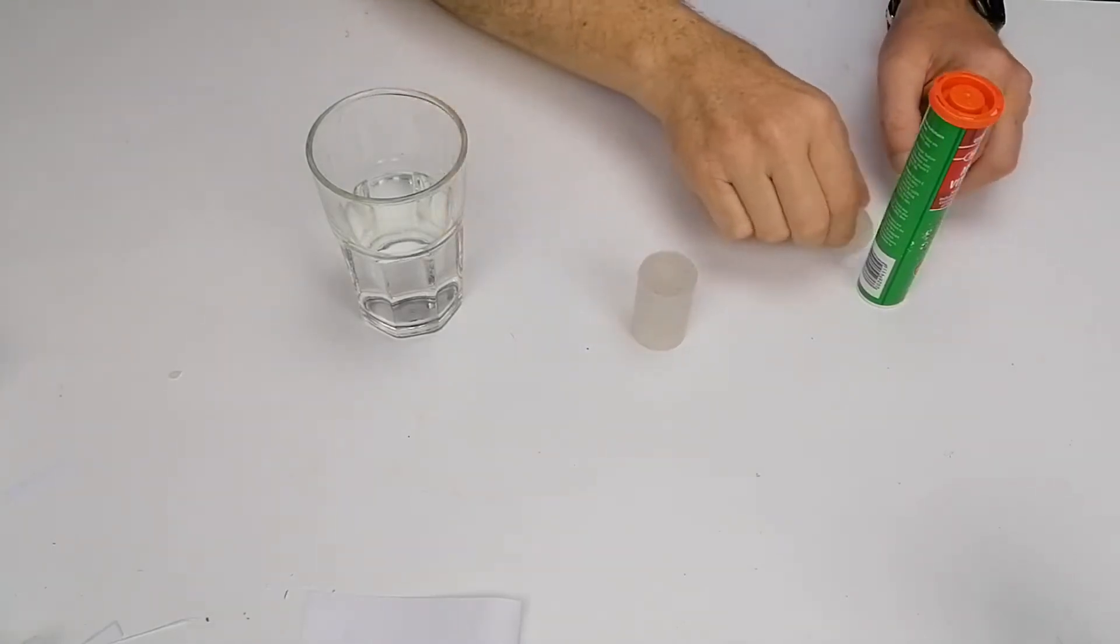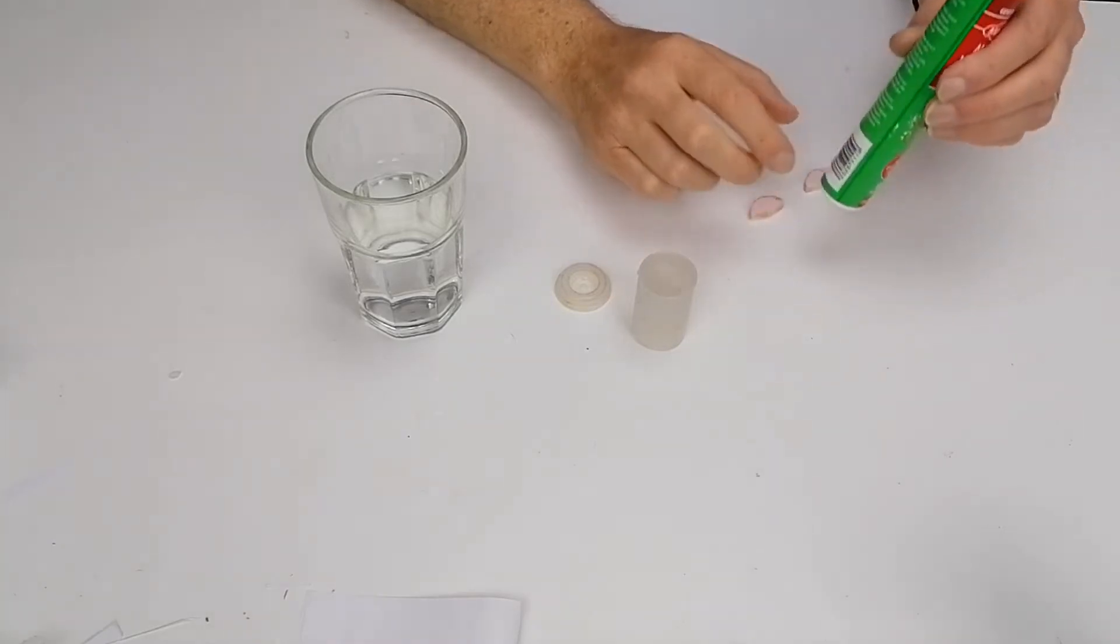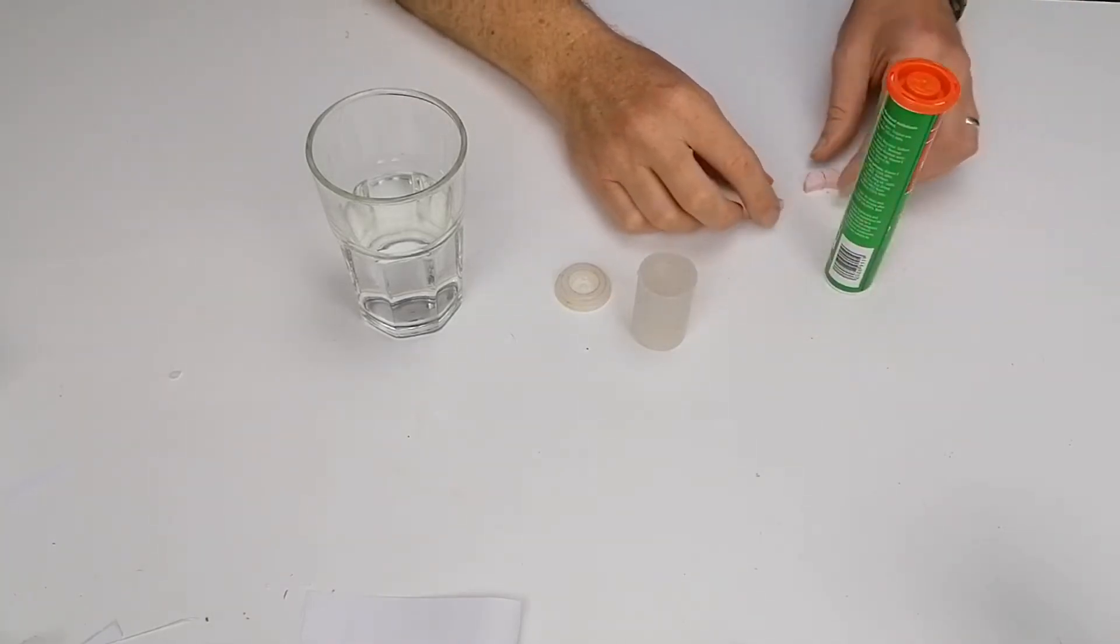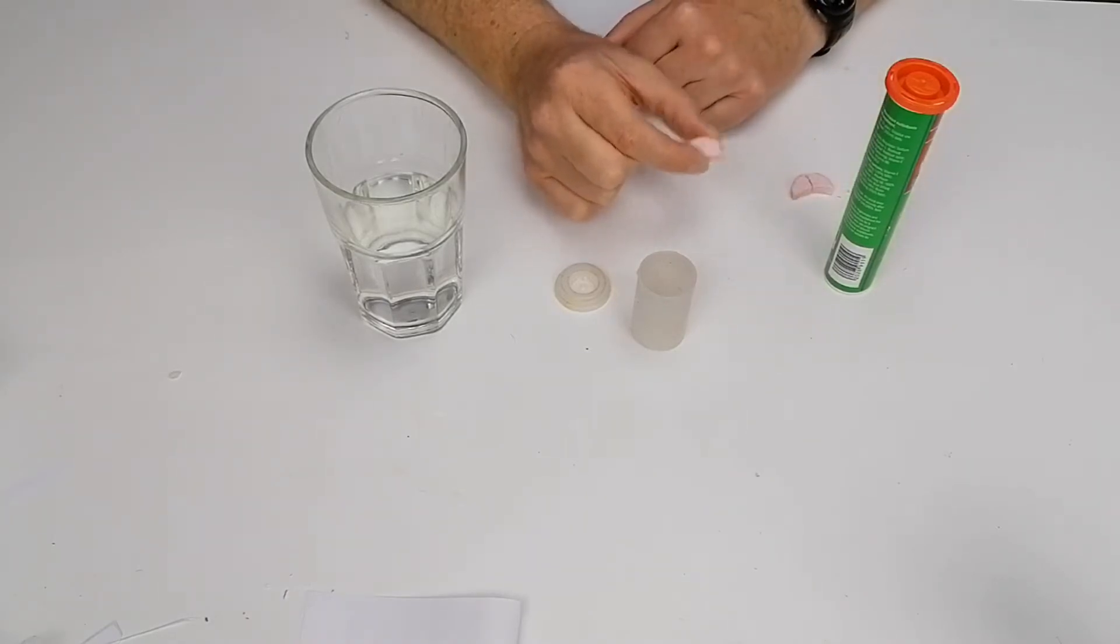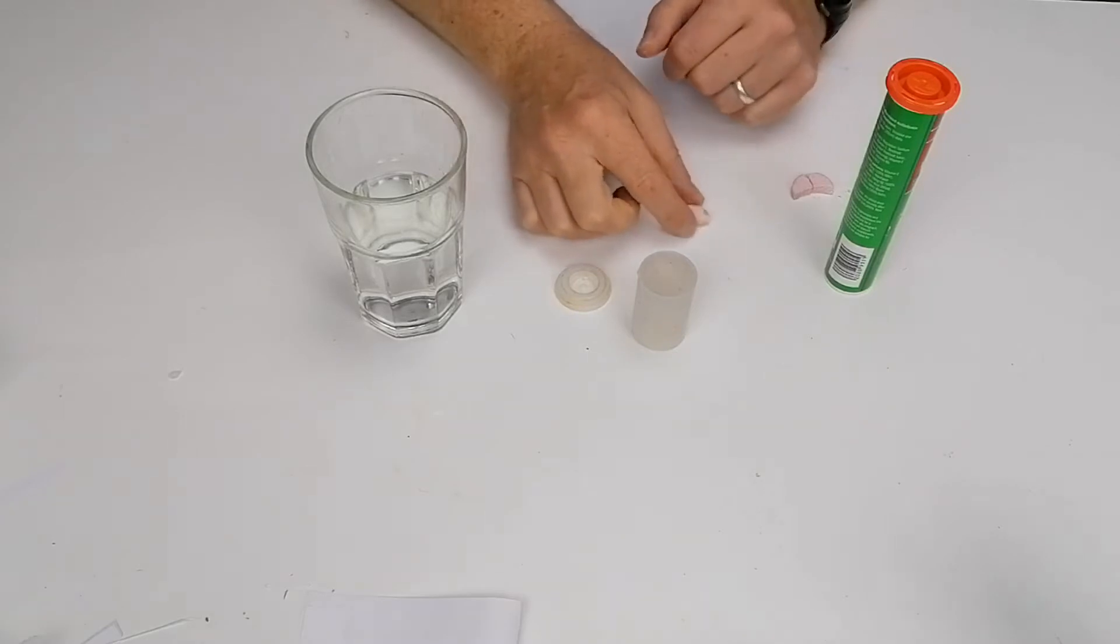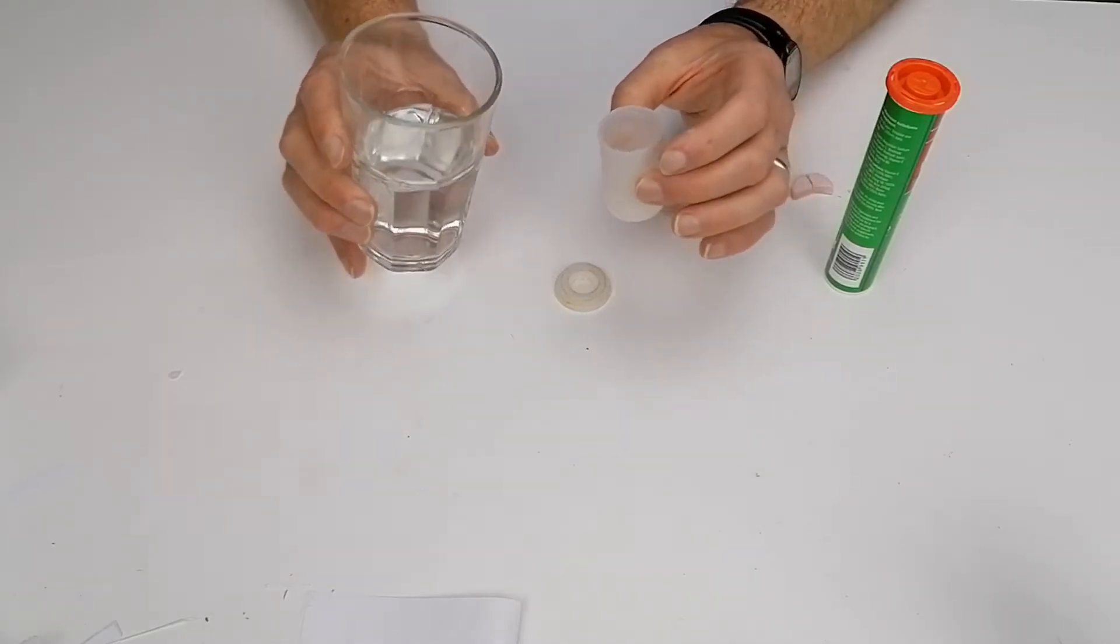The first thing you need to do is take the lid off the film canister, which I've done here, and then take one of the tablets out of the vitamin C box. You won't need a full tablet for this to work, you only need really half a vitamin C tablet. I've broken that here and you're going to place about a quarter of the container filled with water to start with.